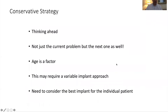When thinking about revision surgery, it's important to try and be as conservative as possible. You have to think ahead to what may occur with the next revision, and obviously take into account the age of the patient — the younger the patient, the more conservative you wish to be. There may be a need for a variable implant approach, and you have to consider the best implant for the individual patient.